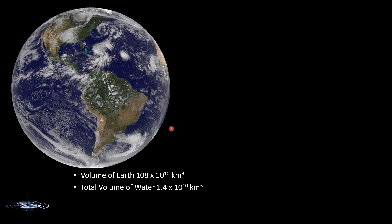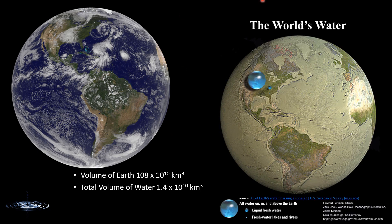Let's see the same thing from a different perspective. A big sphere here represents planet Earth and the small blue marble here represents the total water on Earth — all water on, in, and above the Earth's surface. And out of this total water, fresh water is only 2.5%.